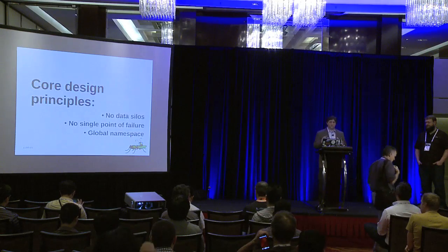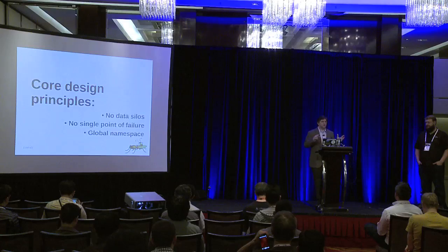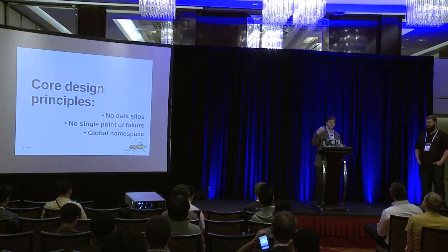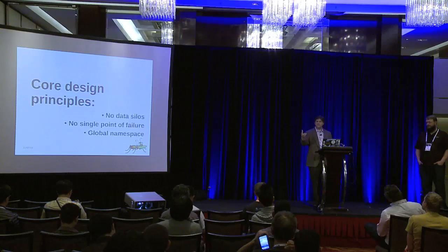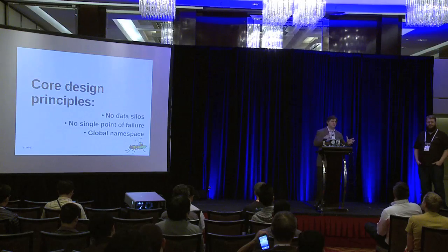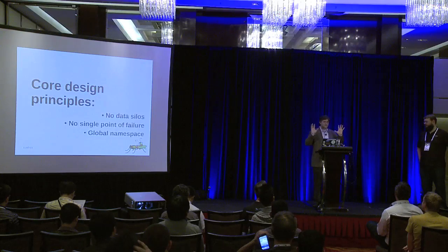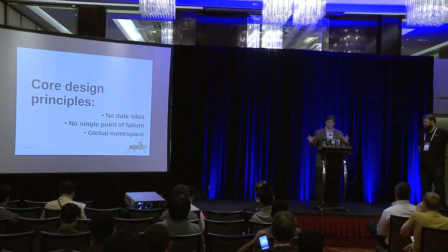The third principle is the global namespace — no matter where you deploy GlusterFS, whether it's in a public cloud on AWS, on an OpenStack cloud, on a virtualized environment, or on bare metal, it should look and behave the same no matter how you're interacting with it. Every application you use to access it should be able to access the global namespace from multiple methods and access the same data.